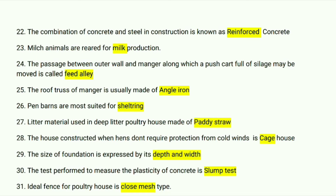Pin barns are most suitable for sheltering litter. The litter material used in deep litter poultry houses is made of paddy straw. The house constructed when hens do not require protection from cold winds is a cage house. The size of a foundation is expressed by its depth and width.